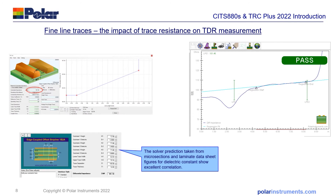Here I've put all three tools together: the SI8000 with predictions taken from accurate microsections and laminate data sheet figures for dielectric constant. When you look at the 101 ohms predicted and the 101 ohms measured on the SITS, and then the projection of DC resistance on the TRC Plus, you can see how all three join together to give you excellent correlation on fine line traces.